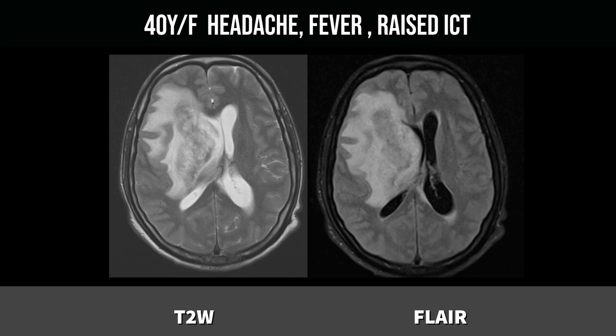On T2, we can see an ill-defined lesion with central hyperintensity and an ill-defined hypointense wall. The same is more or less reflected on FLAIR images. There is a mass effect, midline shift, and falx sign herniation. On coronal images, there is also uncal herniation and brainstem compression.